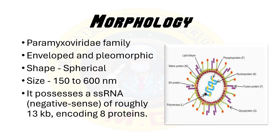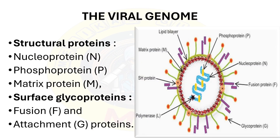Let's start with the morphology of HMPV. This virus is a member of the paramyxovirus family and shares structural characteristics with the avian metapneumovirus. HMPV is enveloped and pleomorphic, primarily spherical in shape, and measures approximately 150 to 600 nanometers in diameter. It possesses a single-stranded negative-sense RNA genome which is roughly 13 kilobases, encoding 8 proteins.